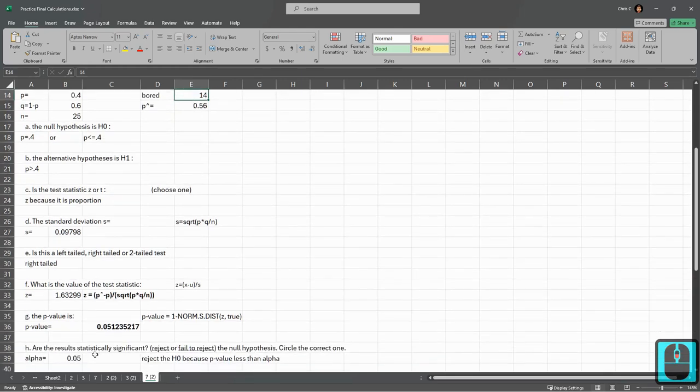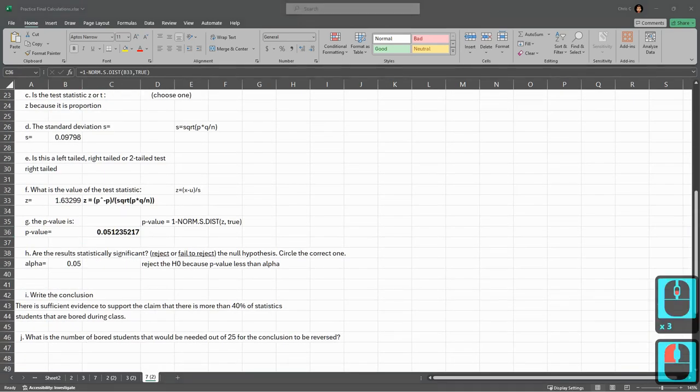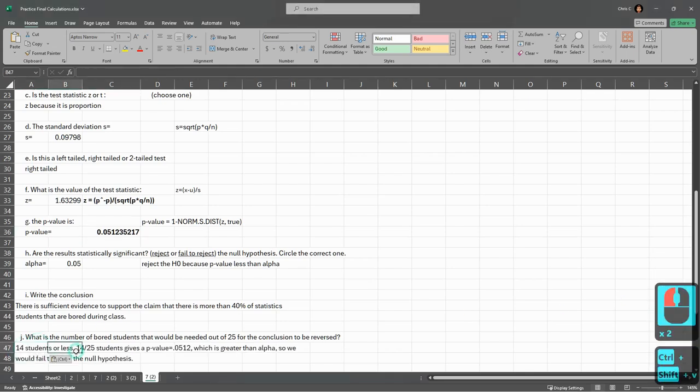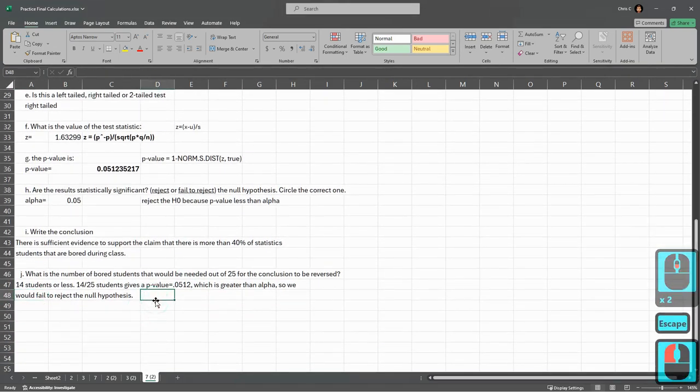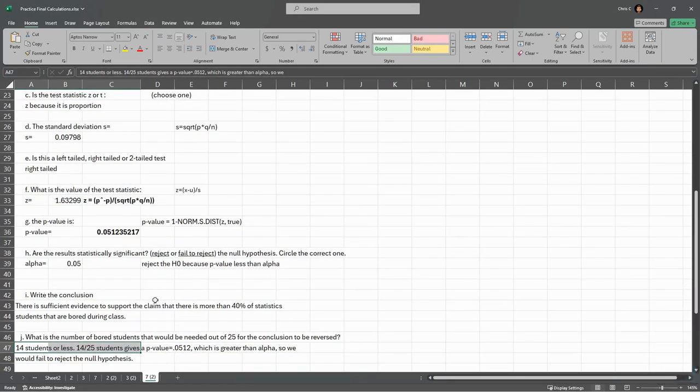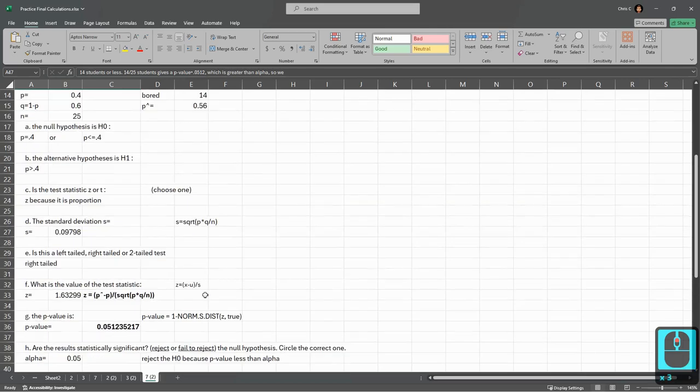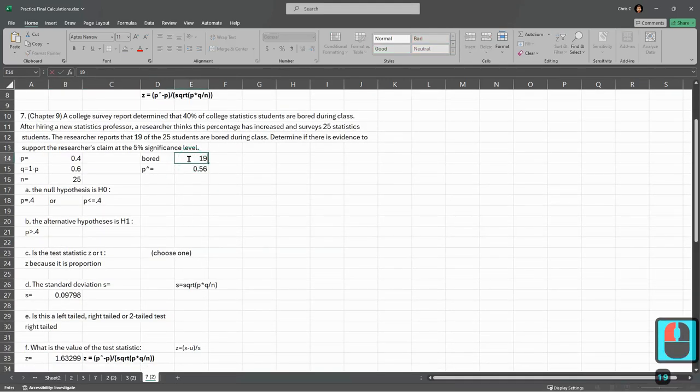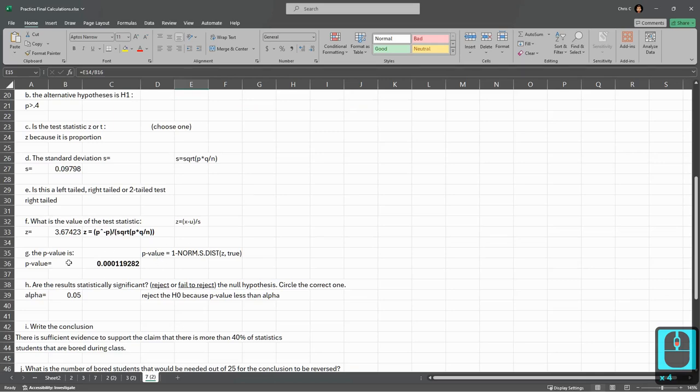So if I had 14 students, my p-value would be higher. So I'm going to copy the conclusion that I wrote because it's nicer than I'll come up with on the fly. So 14 students or less, 14 out of the 25 students gives a p-value of 0.0512, which is greater than alpha. So we would fail to reject the null hypothesis. So 14 or less would be the number we'd need to fail to reject the null or the original hypothesis. So I'm going to put that number back to 19 so that all the calculations are normal and all these answers match.